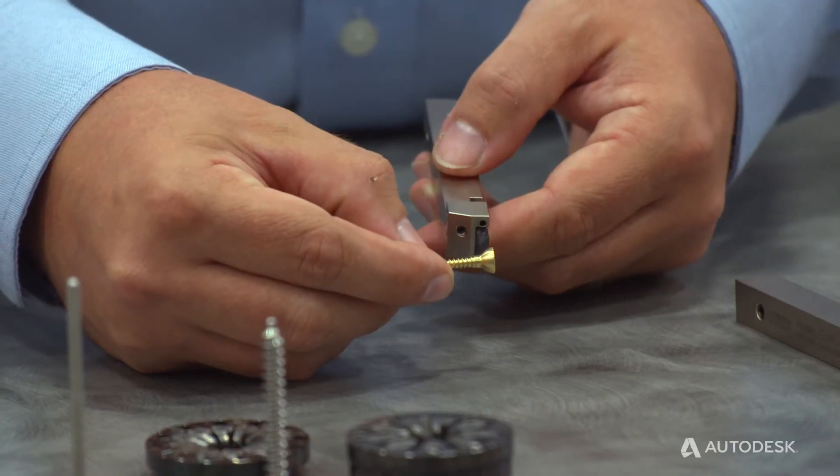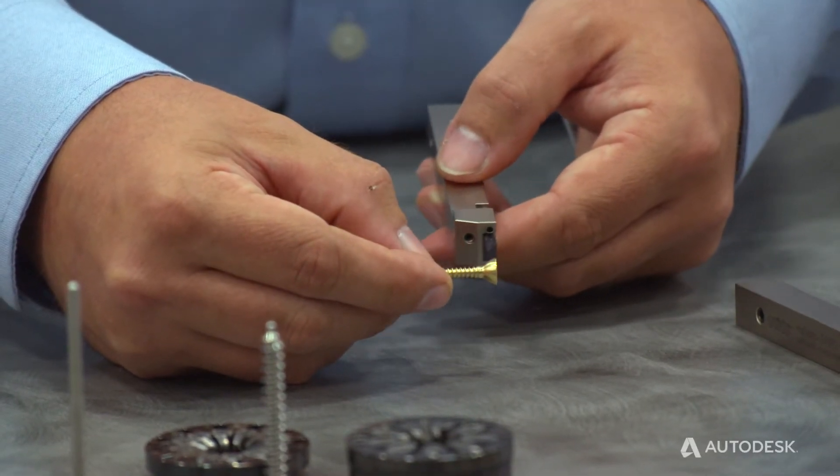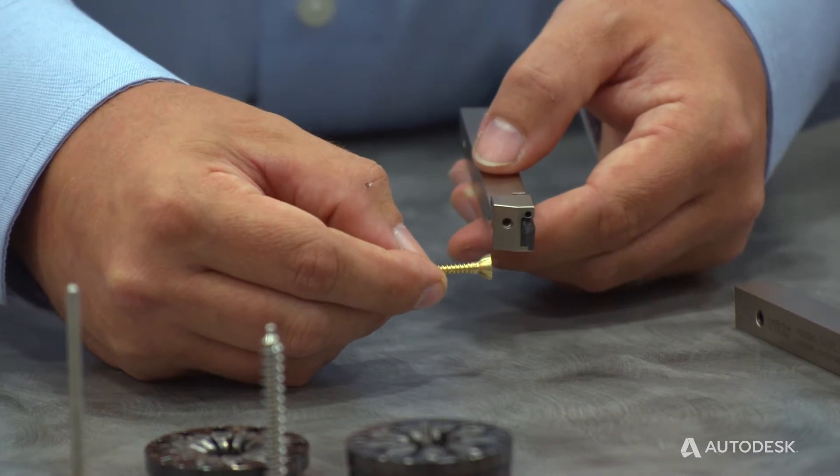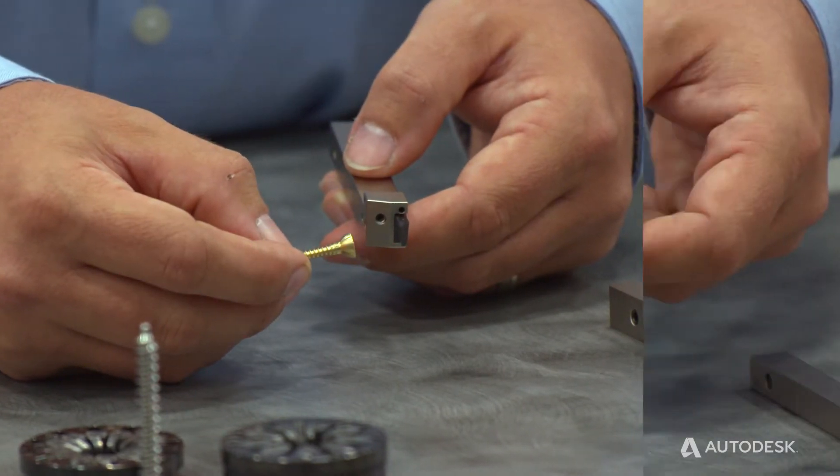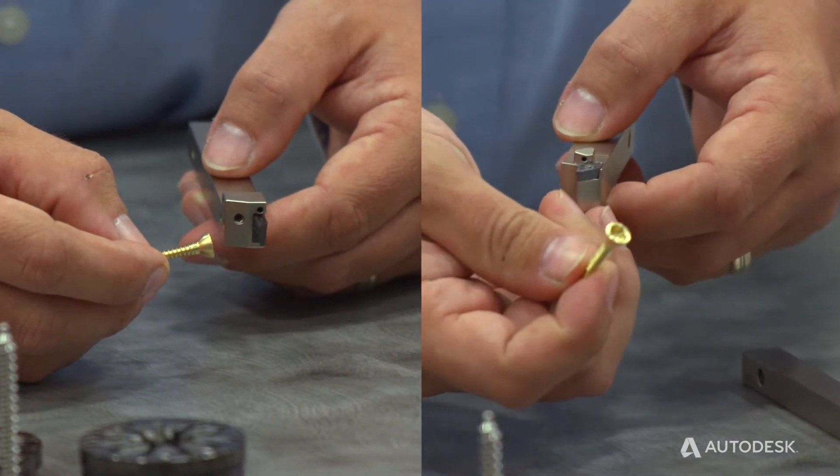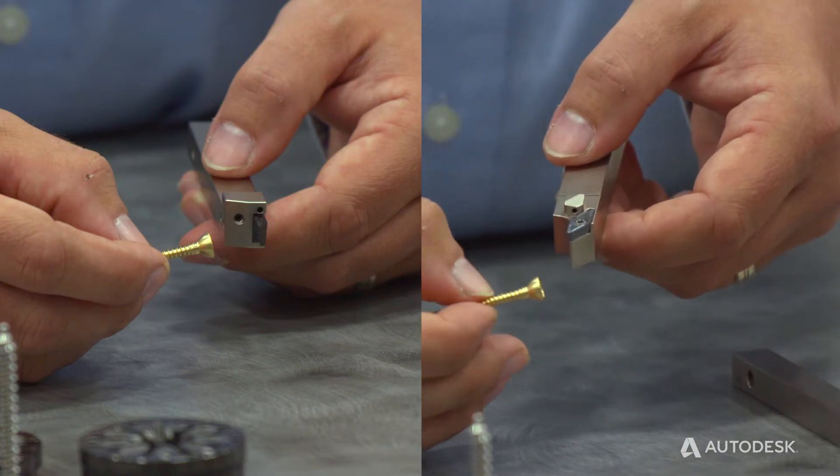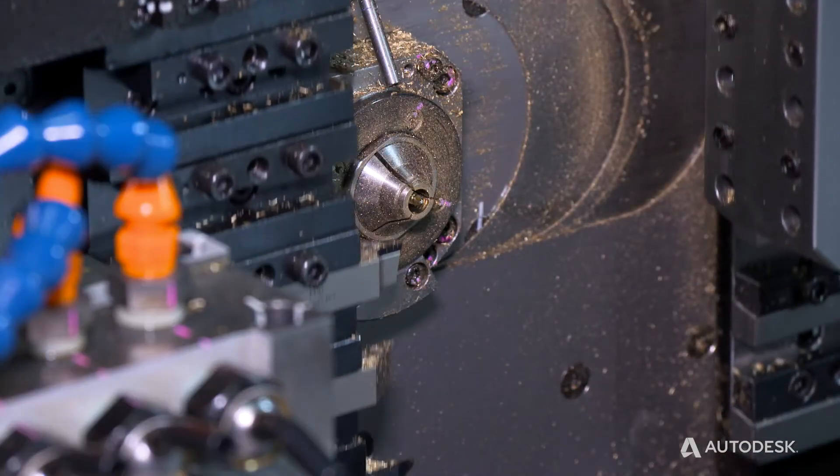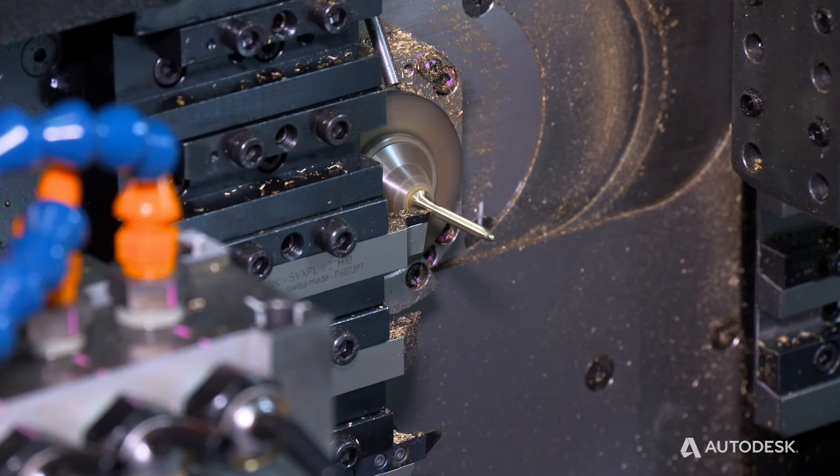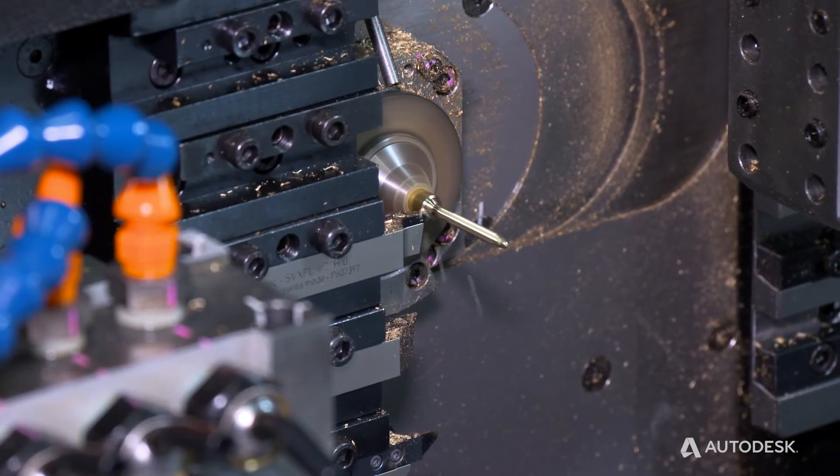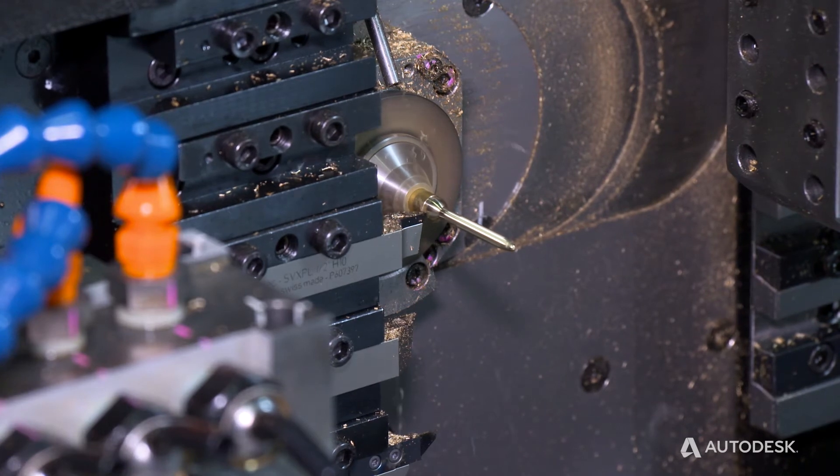This particular insert here is a 29 degree, so it gives you the capability of generating a lot of different profiles on your workpiece. This particular holder here is specifically for back turning, and what we did today is fall behind a shoulder and then turn long lengths, and we've included a wiper geometry on this particular insert for higher surface finish and strength on the leading edge.